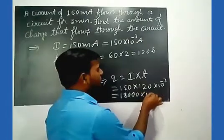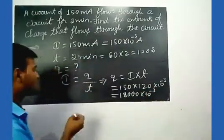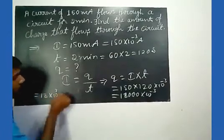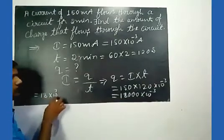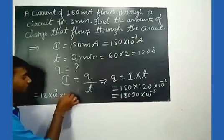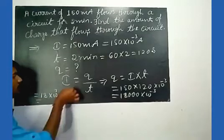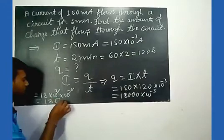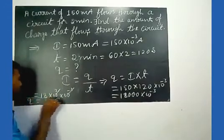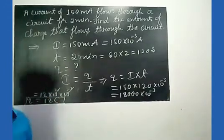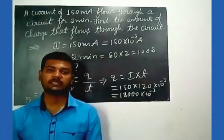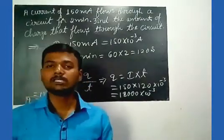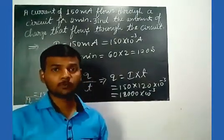Simplifying: 18000 × 10 to the power minus 3 can be written as 18 × 10 to the power 3 × 10 to the power minus 3. The powers of 10 cancel out, leaving 18. So the amount of charge flowing through the circuit is 18 coulombs. The unit of charge is coulomb, so 18 coulombs of charge flows through the circuit in two minutes.